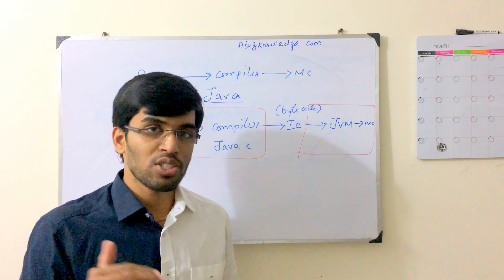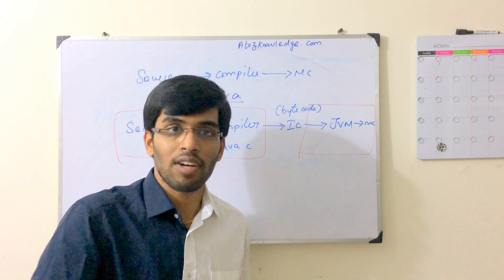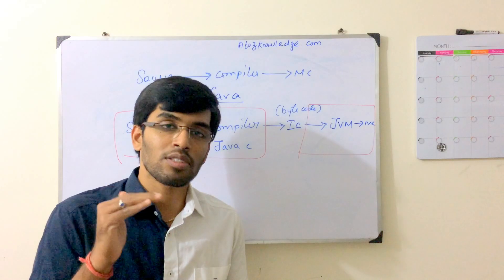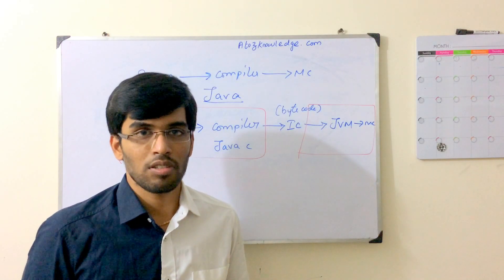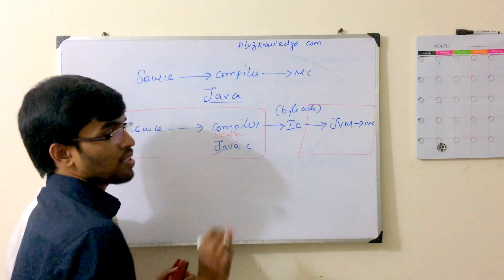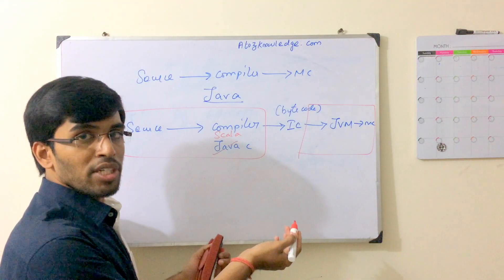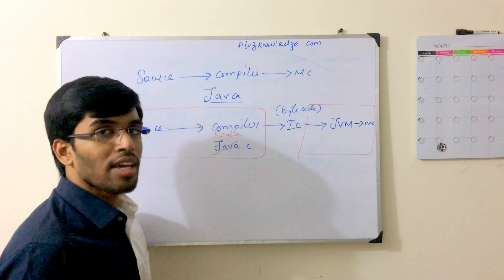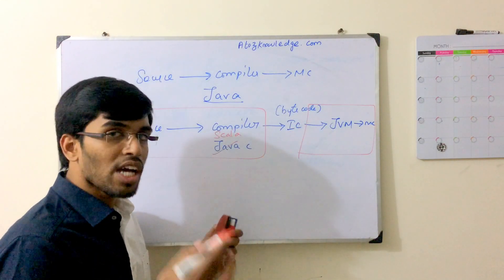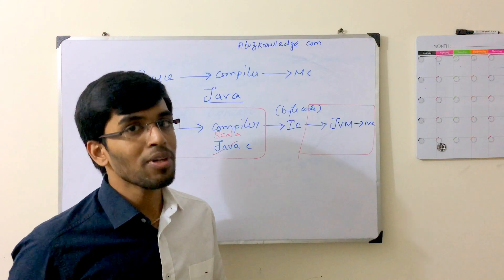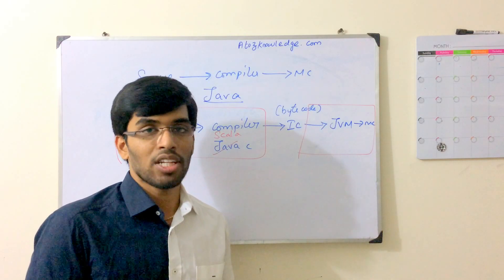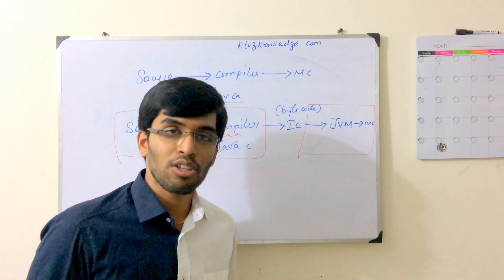Since Scala is written in Java, even to install Scala you need Java first — Java is a prerequisite. Then you install Scala. Scala also uses the same flow, but instead of JavaC, the compiler is called ScalaC. ScalaC also generates bytecode as intermediate code, and that bytecode is again fed to the JVM, which converts it to machine code. So the compilation flow doesn't change — Java and Scala follow the same flow. This raises the question again: how is Scala faster if it uses the same compilation process?